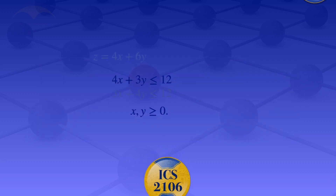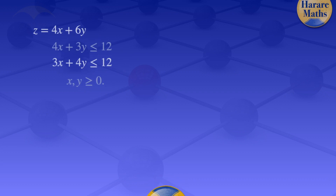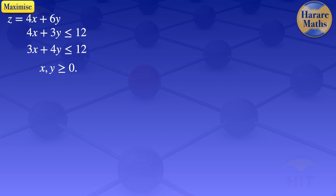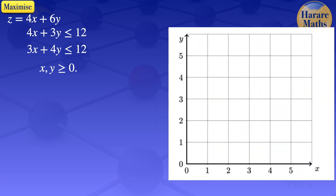To solve it using the graphical method I'll start by drawing my x and y axis, then look at the constraints. For the first constraint, 4x plus 3y less than or equals 12, I'll draw a line which corresponds to that constraint.